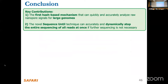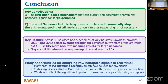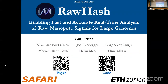To conclude RawHash: we make two key contributions. First, the first hash-based search mechanism applied to raw signals to quickly identify similarities. Second, sequence-until, which can stop the entire sequencing run at once if further sequencing is unnecessary. We show significant improvements in throughput and accuracy. We also see many opportunities to build on top of RawHash, such as applying other sketching techniques and on-the-fly indexing for other use cases.